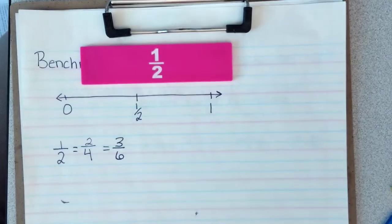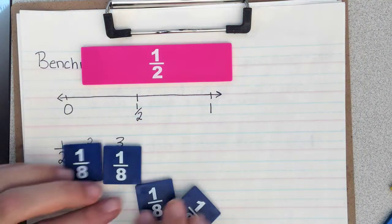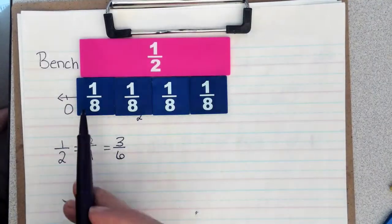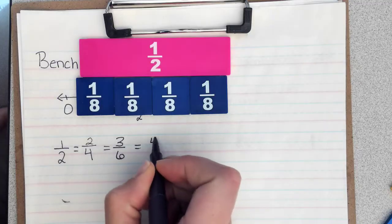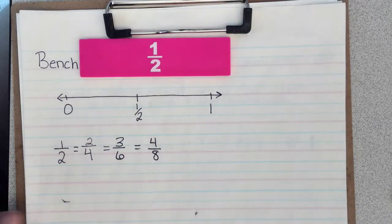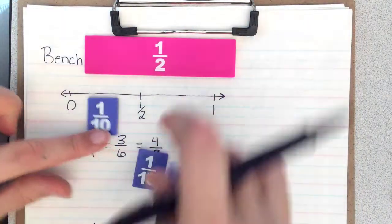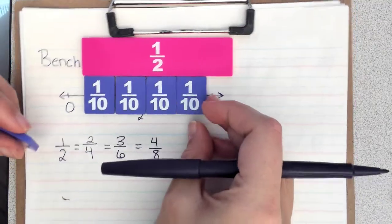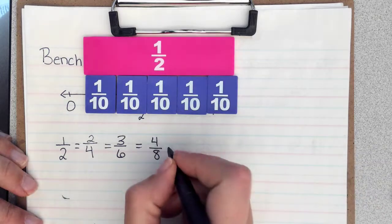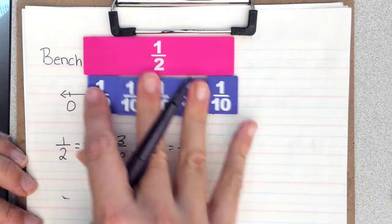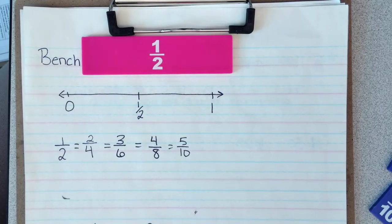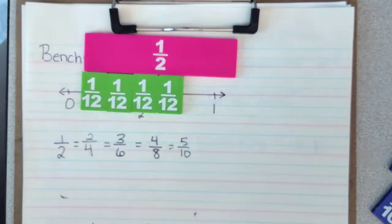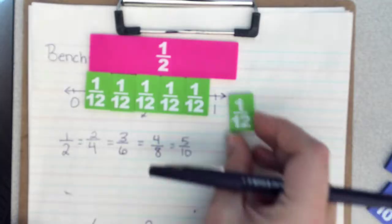Another fraction that would also be equivalent is 4 eighths. And 5 tenths. And finally, 6 twelfths.